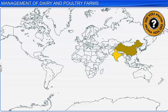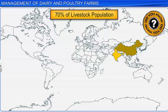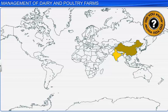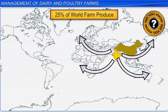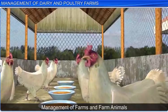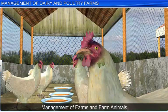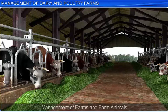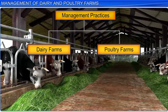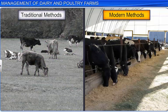Did you know that India and China together contribute more than 70% to the livestock population in the world? However, as the productivity is very low, their contribution to the world farm produce is a mere 25%. To increase the overall quality and productivity of animal produce, strategies and techniques to enhance food production need to be initiated, along with proper management of farms and farm animals. Let us look at the management practices followed in dairy and poultry farms, where traditional methods have been combined with innovative technologies to boost food production.